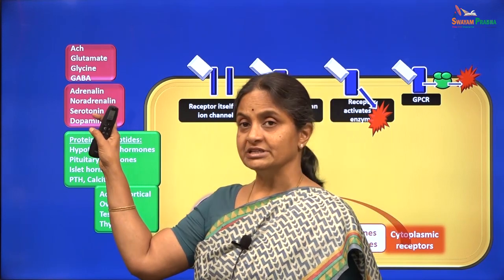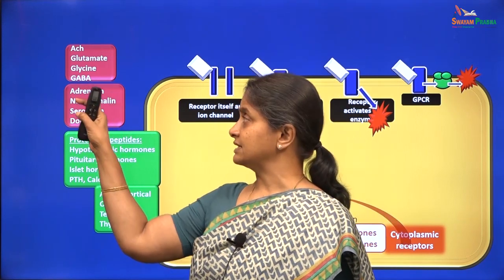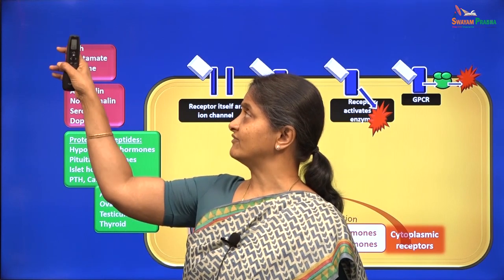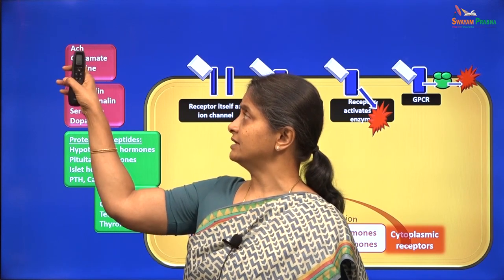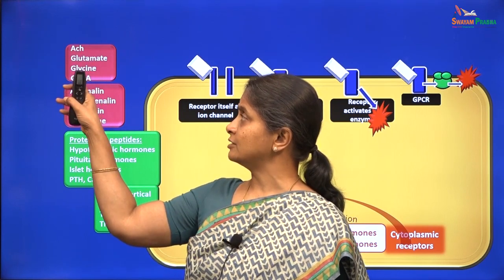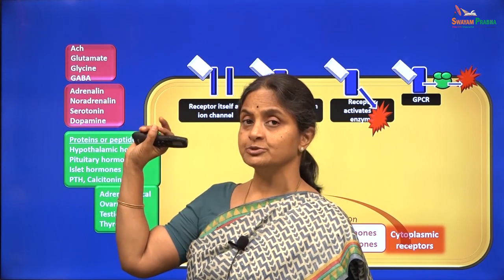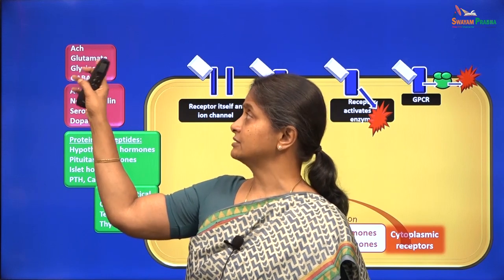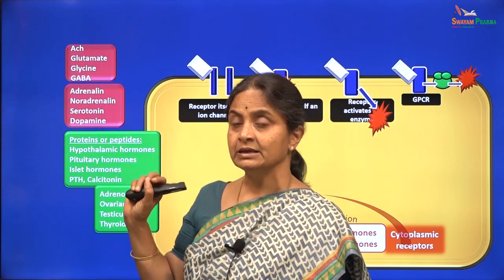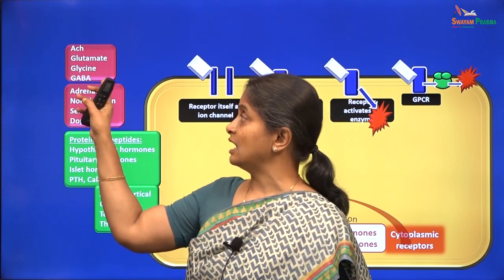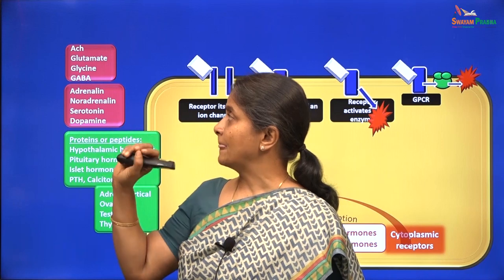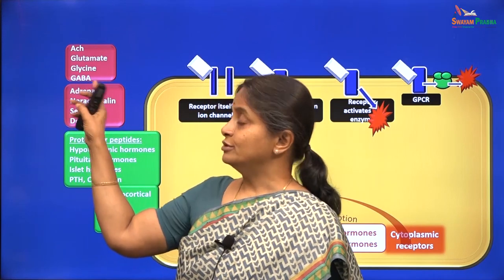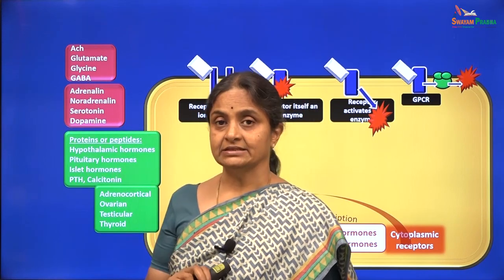Here are the neurotransmitters. These are the catecholamines, and here we have acetylcholine and the neurotransmitters which are single amino acids: glutamic acid, glycine and GABA — gamma-amino butyric acid.